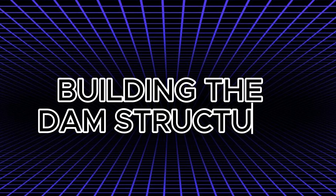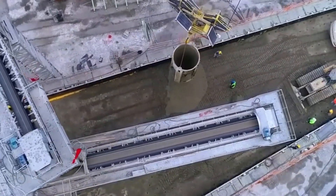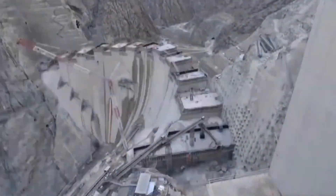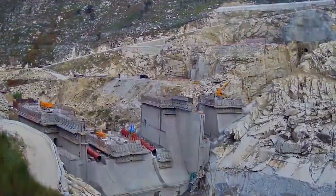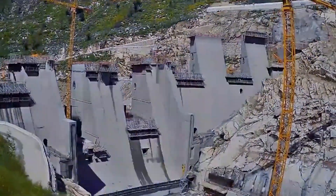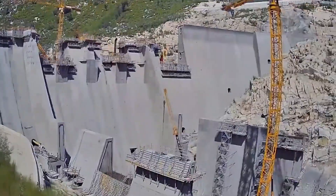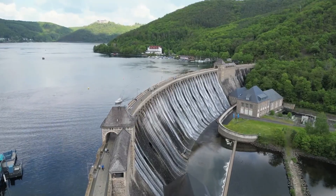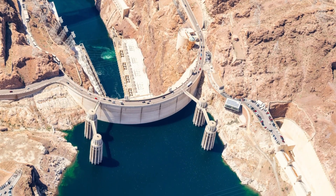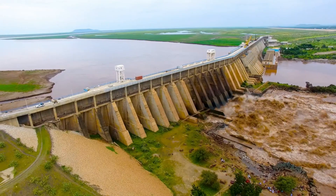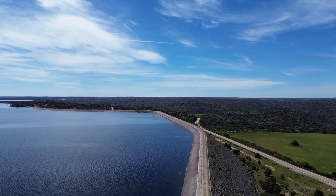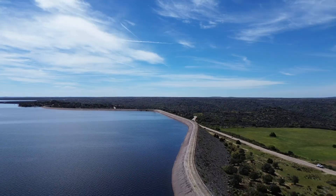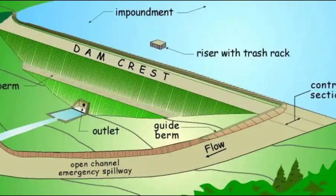Step 5: Building the dam structure. Now that the foundation has been erected, the engineering team will proceed to build the dam structure itself. The construction method used depends on the type of dam. For gravity dams, large quantities of concrete are poured into forms layer by layer, with each layer allowed to cure before the next is added, ensuring a solid, monolithic structure. Arch dams use reinforced concrete shaped to curve upstream — the arch shape distributes water pressure more efficiently, requiring less material than a gravity dam. Earth-fill dams, also known as embankment dams, are constructed using compacted earth and rock placed in layers, with the core often made from impermeable clay to prevent water seepage.